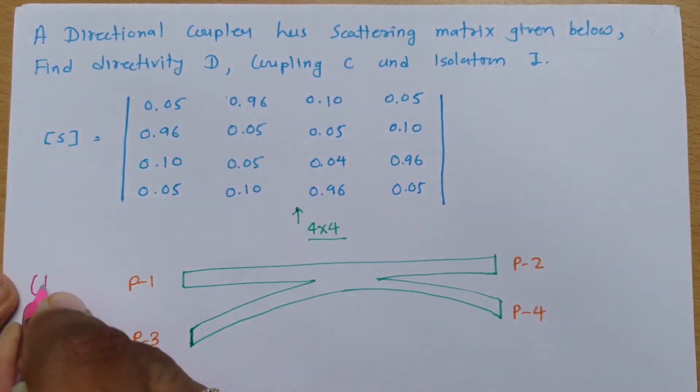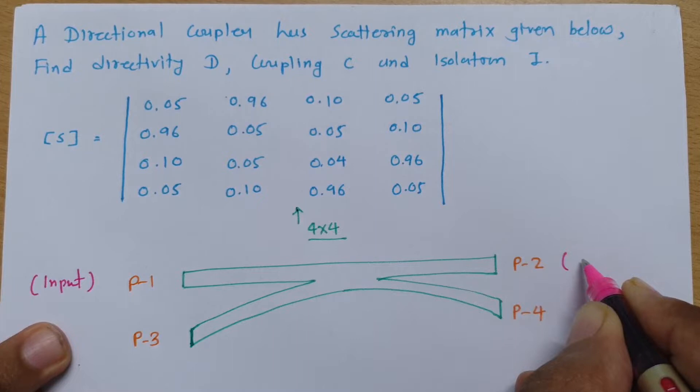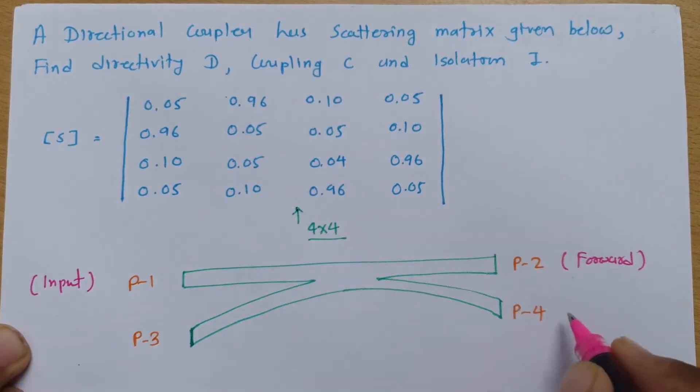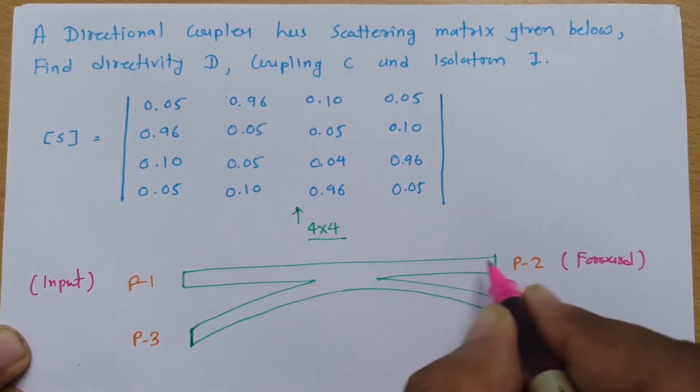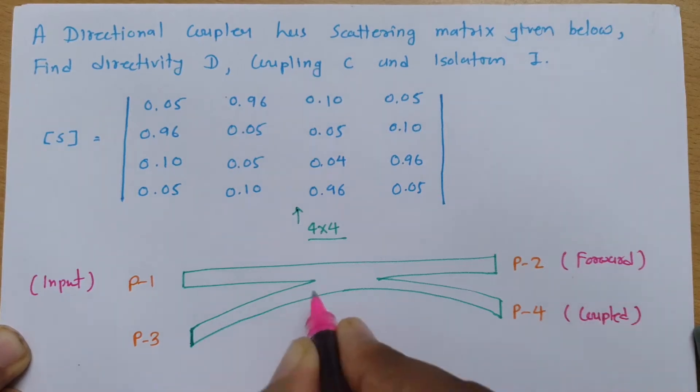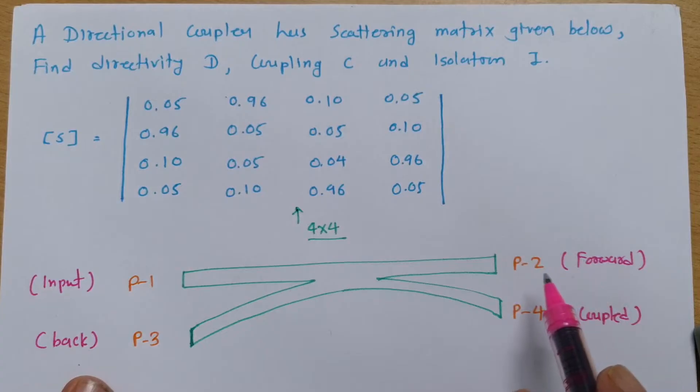In this directional coupler, if I say this is the input port, then over here this will be my forward output. This is the forward output from 1 to 2. Output at port 4 has to be the coupled output, and this will be my back output. So if I give input at port 1, forward output will be at port 2, coupled output will be at port 4, and back output will be at port 3.